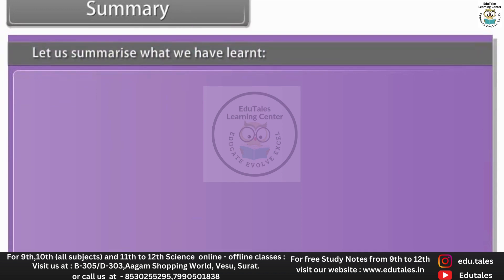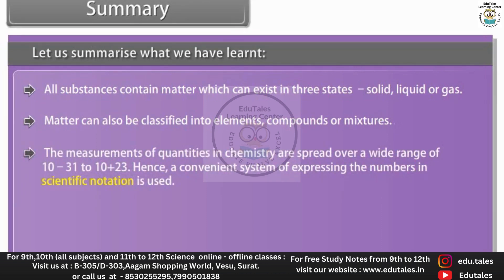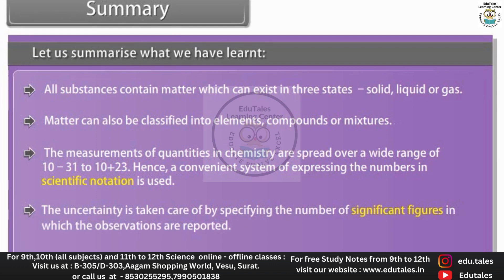Let us summarize what we have learned. All substances contain matter which can exist in three states: solid, liquid or gas. Matter can also be classified into elements, compounds or mixtures. The measurements of quantities in chemistry are spread over a wide range of 10^-31 to 10^+23. Hence, a convenient system of expressing the number in scientific notation is used. The uncertainty is taken care of by specifying the number of significant figures in which the observations are reported. The combination of different atoms is governed by basic laws of chemical combination.